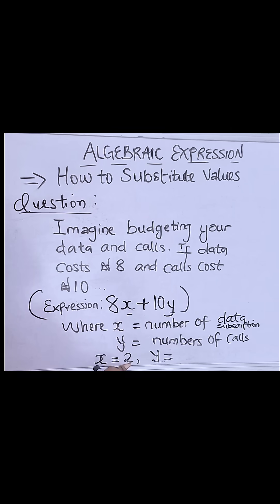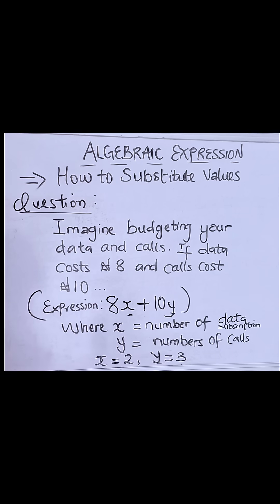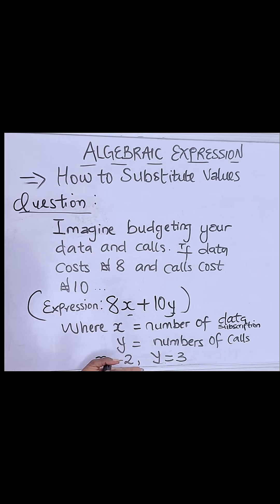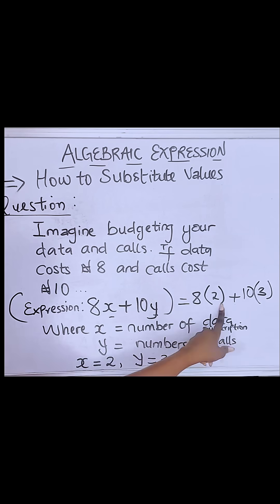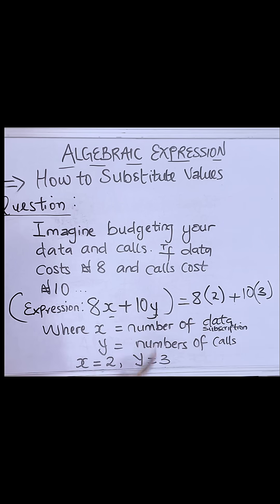Let's say that you subscribe twice in a month and then you make calls three times in a month. All you have to do is just substitute the values of these variables. From here you substitute the value of x which is 2, and then you substitute the value of y which is 3.